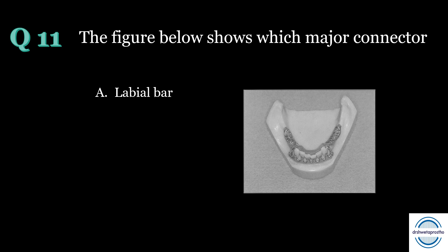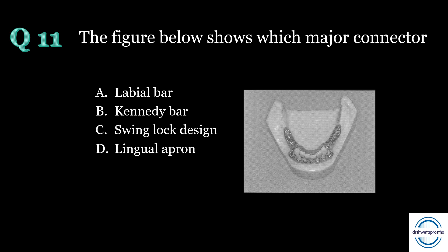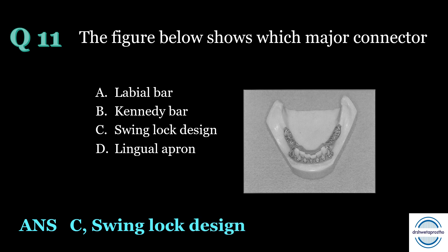Question number eleven: the figure below shows which type of major connector? A. Labial bar, B. Kennedy bar, C. Swing lock design, D. Lingual apron. The answer is C, swing lock design. It contains one lingual plate and a labial bar. The lingual plate provides rigidity and the labial bar provides extra retention and stability. Kennedy bar is a double lingual bar, and lingual apron is another name for the lingual plate major connector.